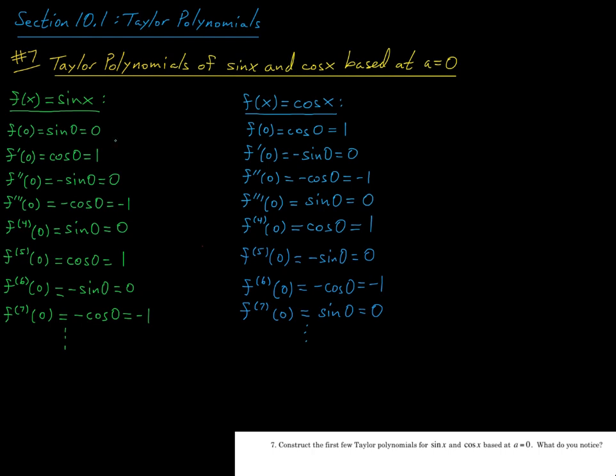And now this pattern is just going to continue. Okay, so we get this pattern 0, 1, 0, negative 1, 0, 1, 0, negative 1, so on and so forth. Now for cosine, we get a similar pattern. This is 1, 0, negative 1, 0, 1, 0, negative 1, 0, and so on.